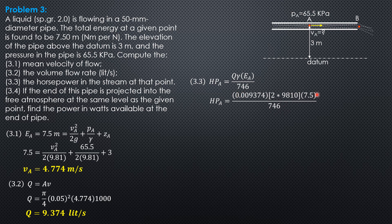The numerator is in watts, so we divide by 746 watts per horsepower. The horsepower at A is HP_A = 1.849 hp.